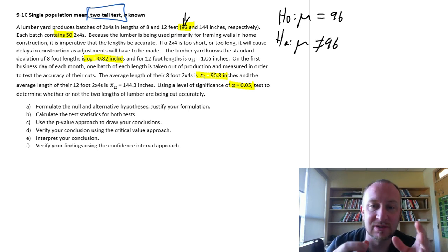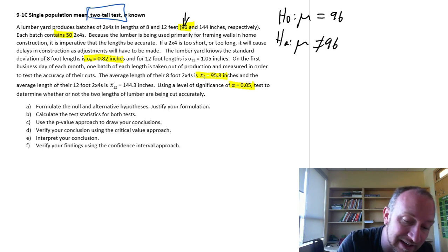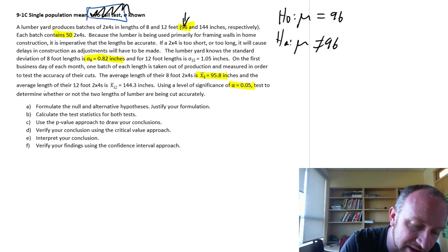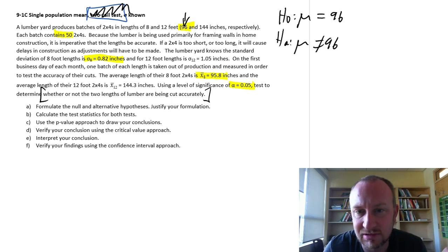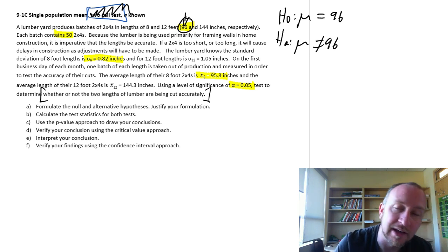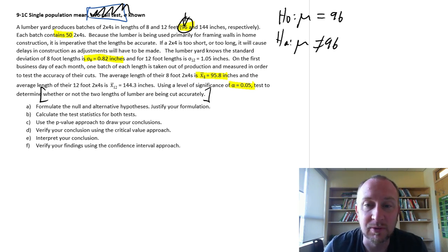Now, in order to know if it didn't tell us that we're doing a two-tailed test, how could we tell? Well again, the problem always has clues. That last sentence says, we want to test to determine whether or not the lumber are being cut accurately. And we want them to be cut to 96 inches. So if we want it to be cut accurately, that means we don't want it to be cut too long. We don't want it to be cut too short, we want it to be fairly precise to 96 inches. Is it 96 inches or is it not 96 inches?